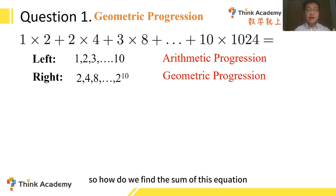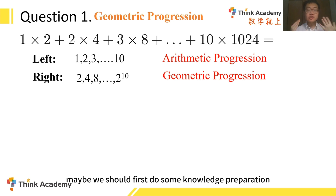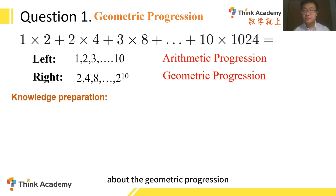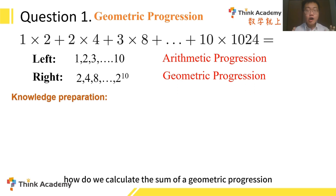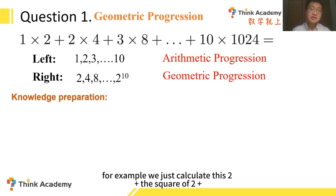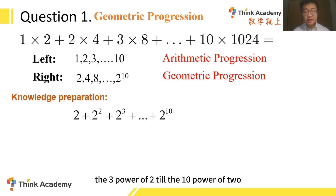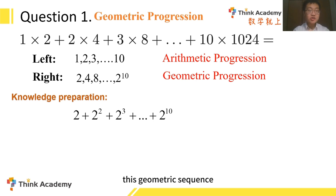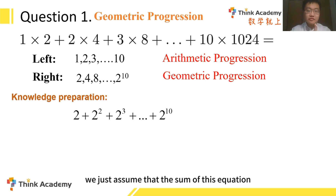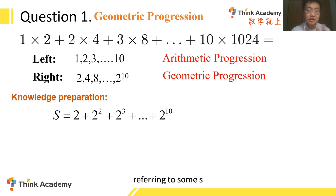So how do we find the sum of this equation? We should first do some knowledge preparation about the geometric progression — specifically, how do we calculate the sum of a geometric progression. Let's make this question easier. For example, we just calculate 2 + 2² + 2³ + ... + 2¹⁰. If we want to find the sum of this geometric sequence, normally we can use the two-step method to solve it. So we assume the sum of this equation to be a value s.